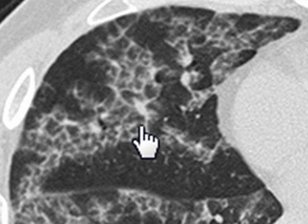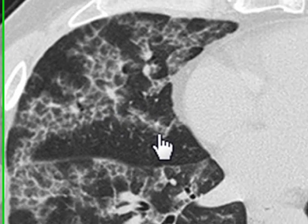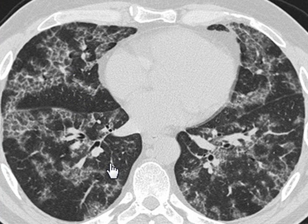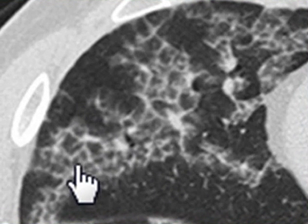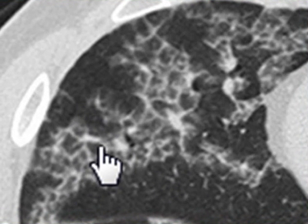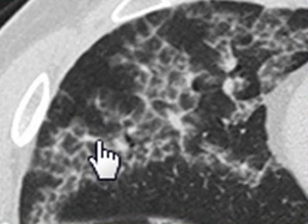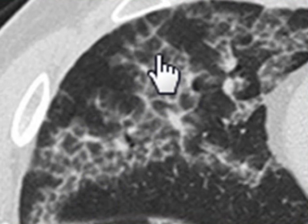Whenever you see prominent interlobular septa, it means a patient is suffering from a condition involving the interstitium rather than the alveoli. However, many such conditions eventually involve the alveoli as well, either as a direct or indirect effect. You can see some thickened lines that are creating a polyhedral shape — the structure surrounded by this pattern is a secondary pulmonary lobule, and we can identify a number of them in this area.